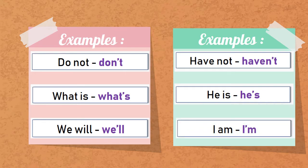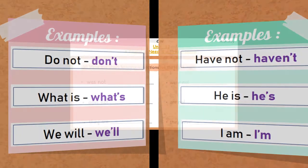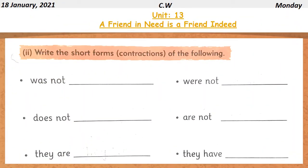Now open your book page 75. Question number two: write the short forms, means contractions, of the following. Was not—wasn't. Does not—doesn't. They are—they're. Were not—weren't. Are not—aren't. They have—they've.